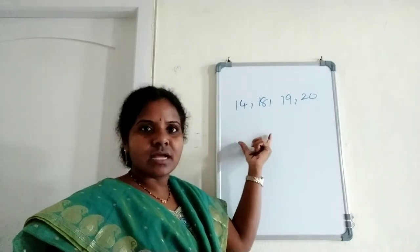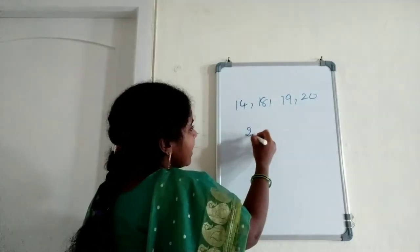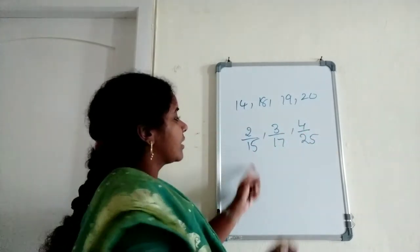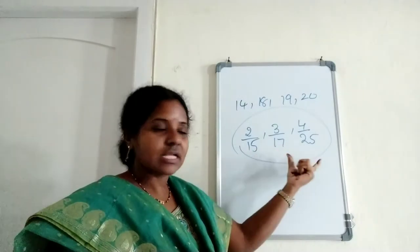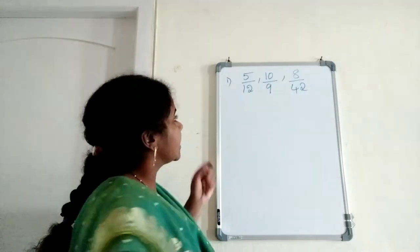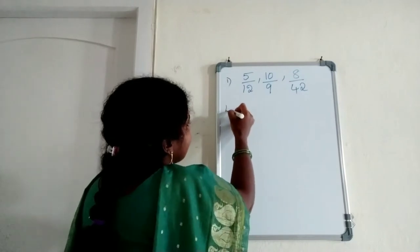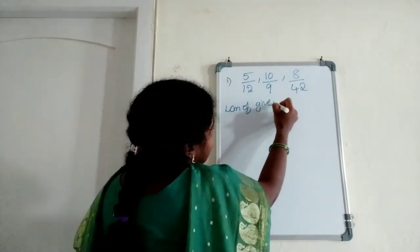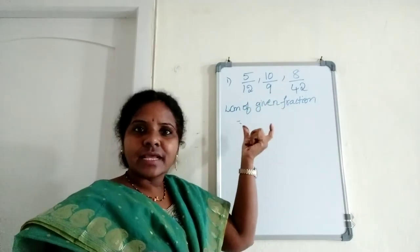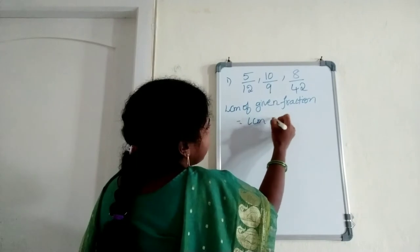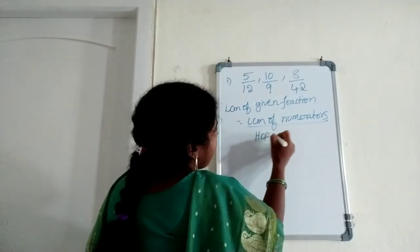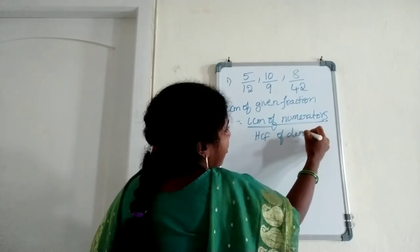In exams or in any competitive test, they will ask: find the LCM of 2/15, 3/17, and 4/25 — given in fraction form. How to find the LCM if the question is in fraction form? The formula is: LCM of given fractions = LCM of numerators divided by HCF of denominators.